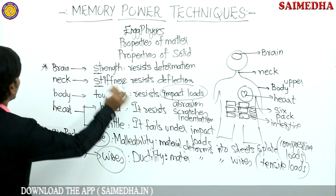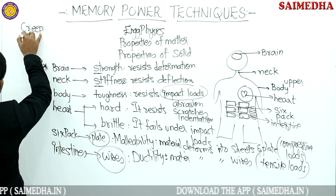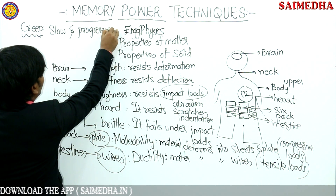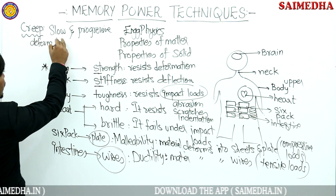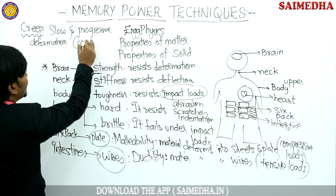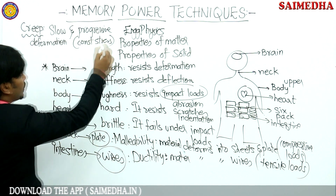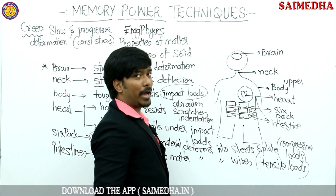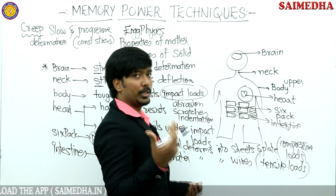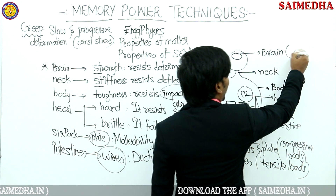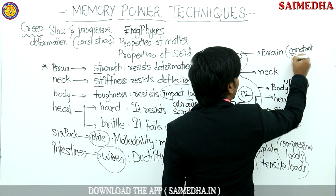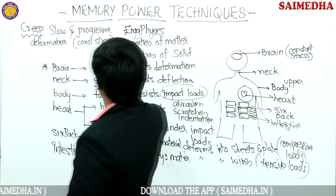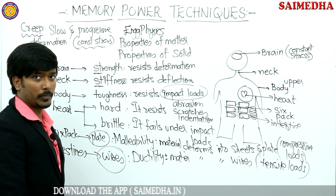The last two properties: one is creep. What is the meaning of creep? Slow and progressive deformation. The keyword is constant stress — and also high temperatures. When this body is going to have constant stress, it is going to fail slowly. That property is called creep.